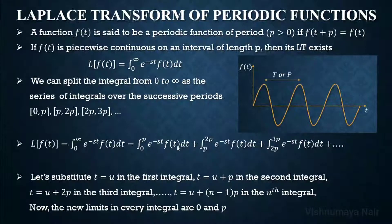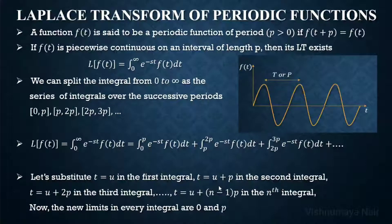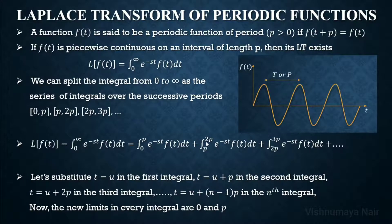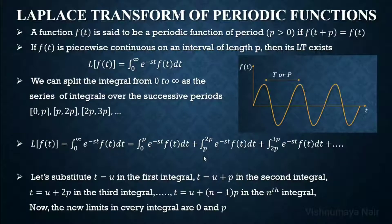In the first integral, the limit is already from 0 to p. In the second integral, we substitute t with u plus p, so u equals t minus p. When t equals p, u equals 0, and when t equals 2p, u equals p — so this integral converts to limits 0 to p. Similarly, in the third integral, substituting t with u plus 2p gives u equals t minus 2p, and when t goes from 2p to 3p, u goes from 0 to p.